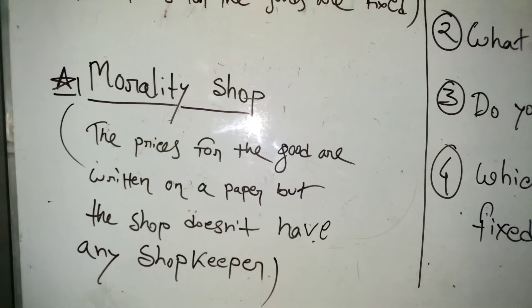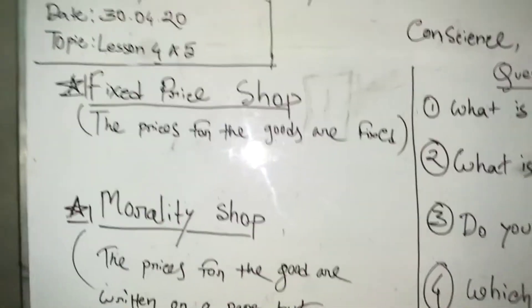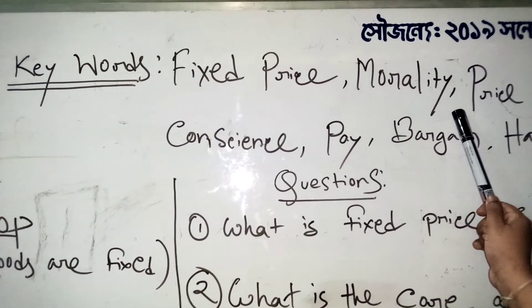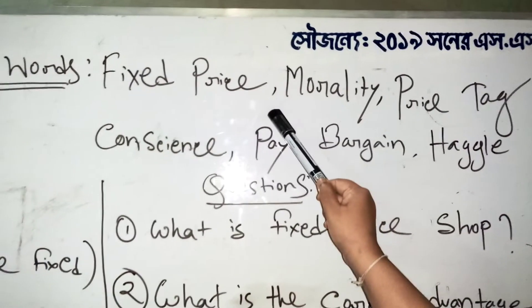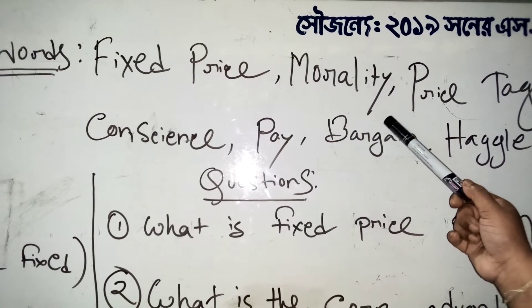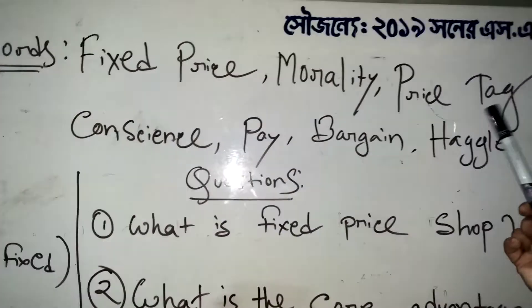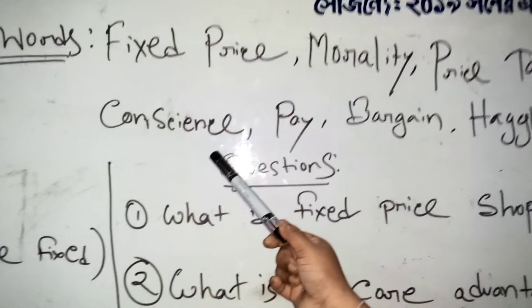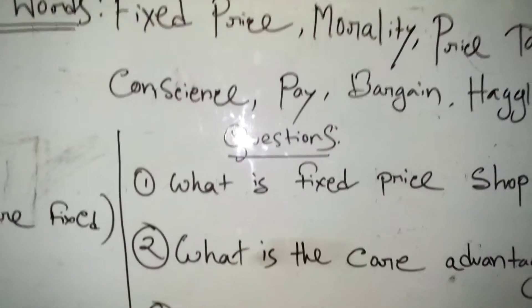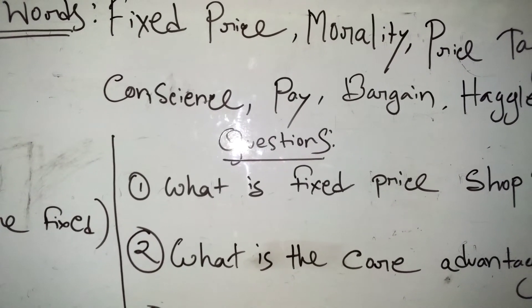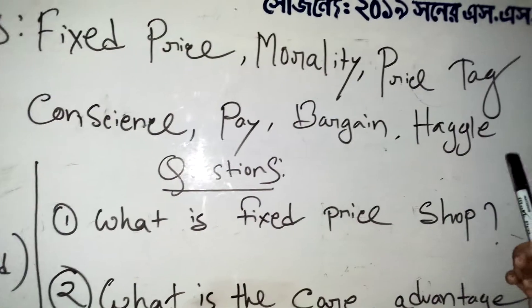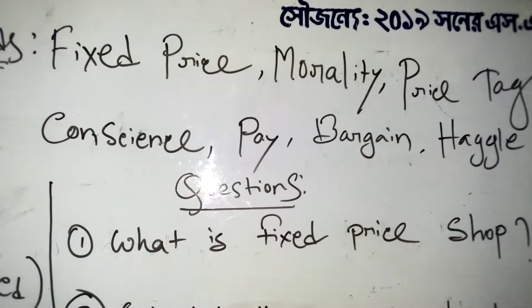Before starting the whole lecture, I'd like to introduce some keywords. The first is 'fixed price' — meaning a set or fixed cost. The second is 'morality' — an abstract noun meaning honesty. The third is 'price check' — detecting the price level. 'Conscience' is another abstract noun referring to your inner quality. 'Pay' means giving money. 'Bargain' and 'haggle' have similar meanings — both mean arguing for a better price.